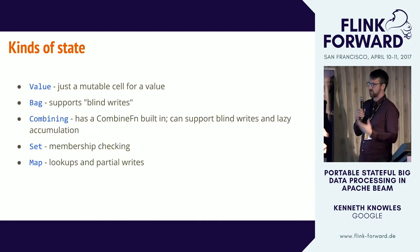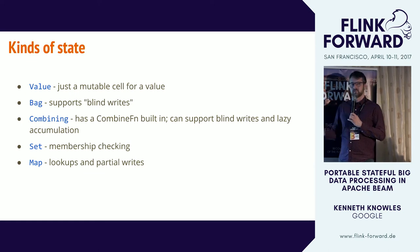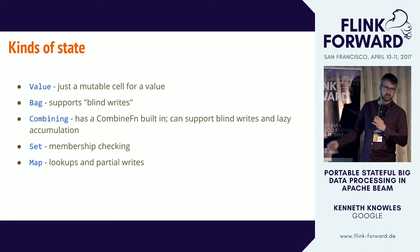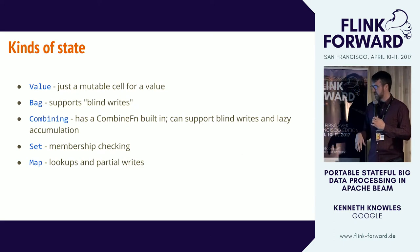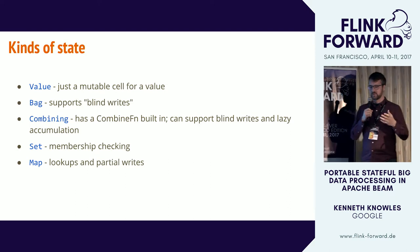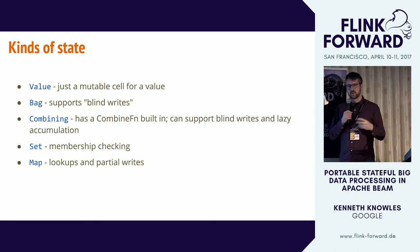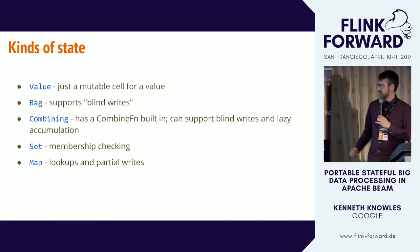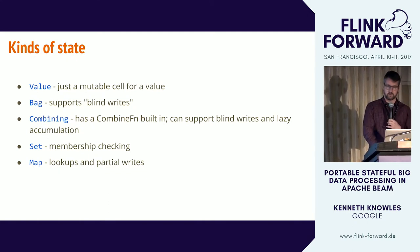That's the gist of how you do state on its own. I'll get to timers in just a second, but first the kinds of state we have. We've got value state, which is just a mutable value. Bag state supports blind writes — you can throw elements in without doing a read-modify-write. Combining state collapses elements into an accumulator, giving the runner backend leeway in when it combines accumulators. Set state supports efficient membership checking. And map state supports lookups of individual keys and partial writes — writing just a few keys at a time without pulling in the whole map.